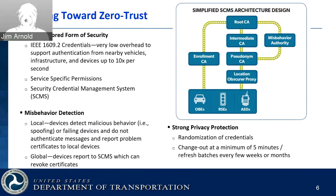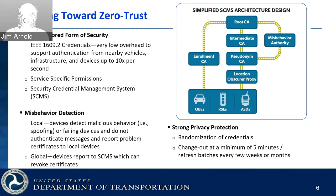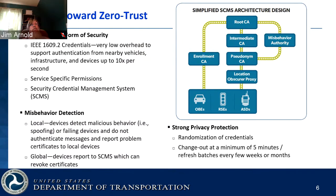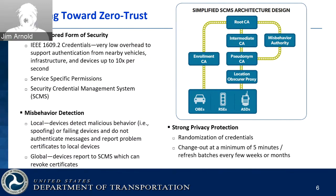Moving toward a zero-trust environment: from a transportation perspective, we actually broadcast everything in the clear but attach a certificate to the message every so often. That certificate allows us to verify that the sender is operating within the constraints of the network. We look for misbehaving devices via misbehavior protection and offer strong privacy protections. We change MAC addresses every 75 to 150 seconds, making it nearly impossible to track a single vehicle traveling down the road.